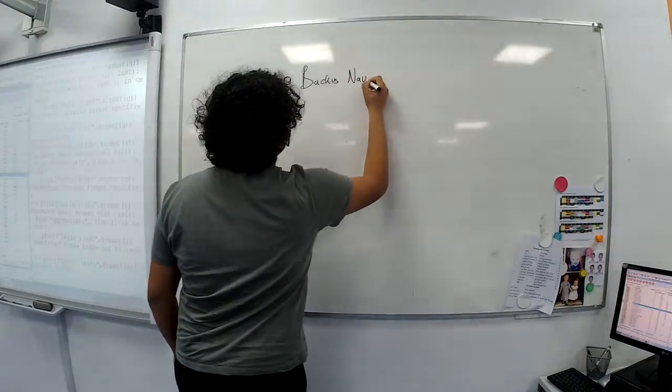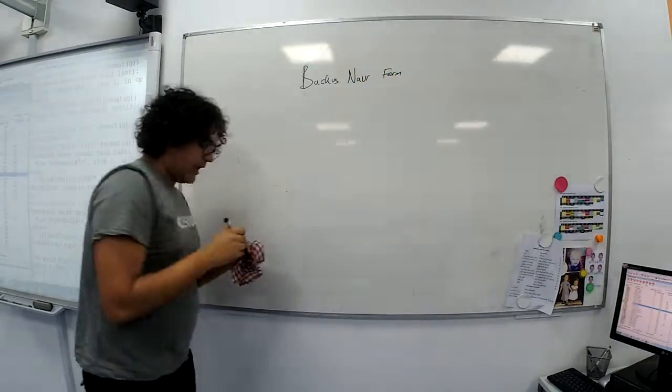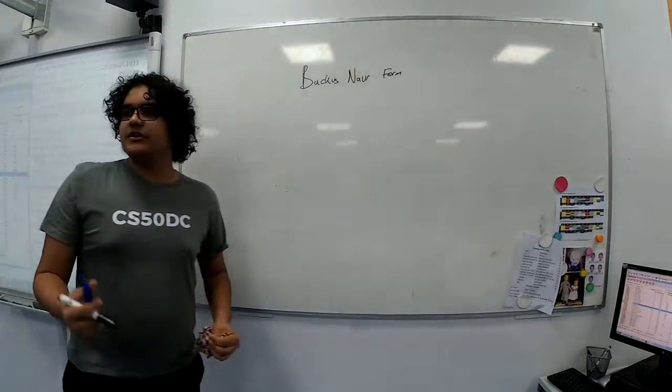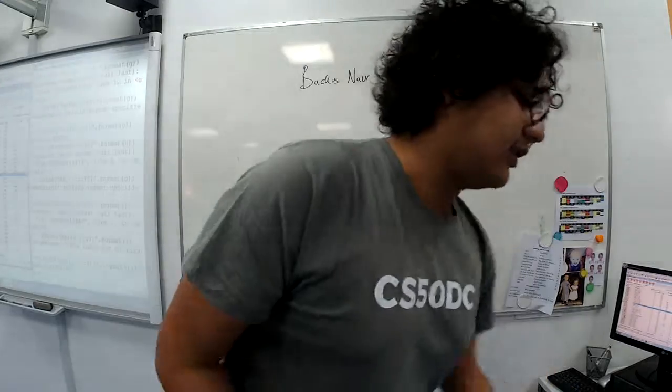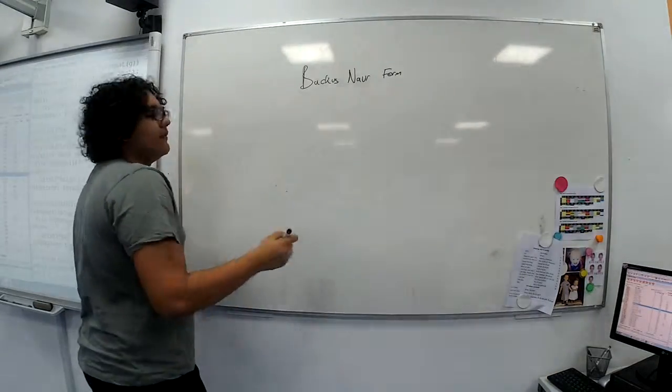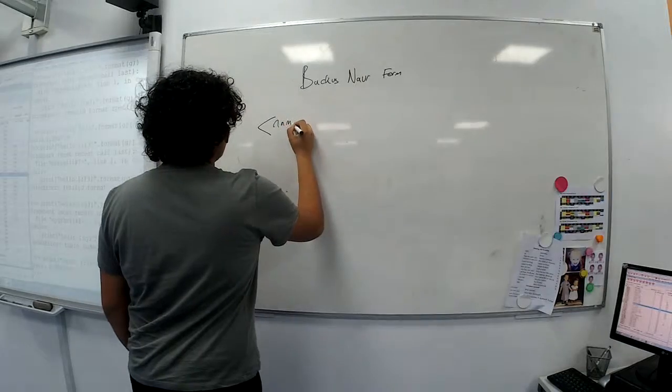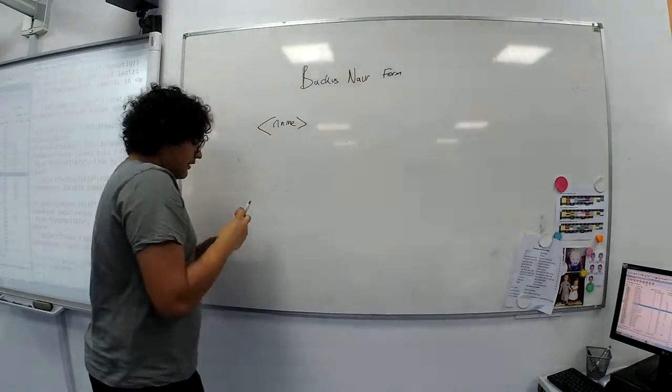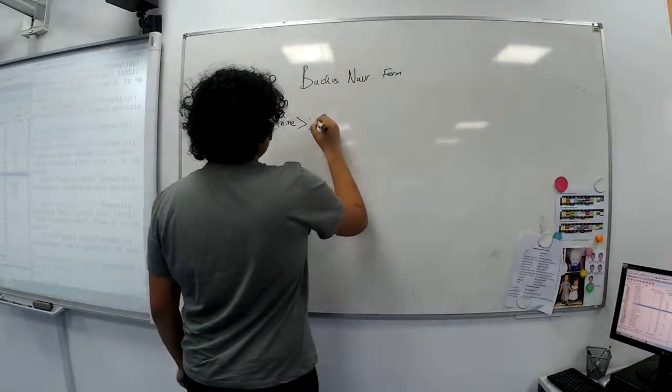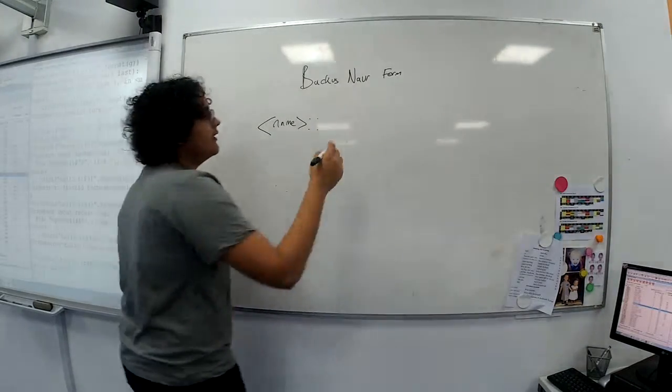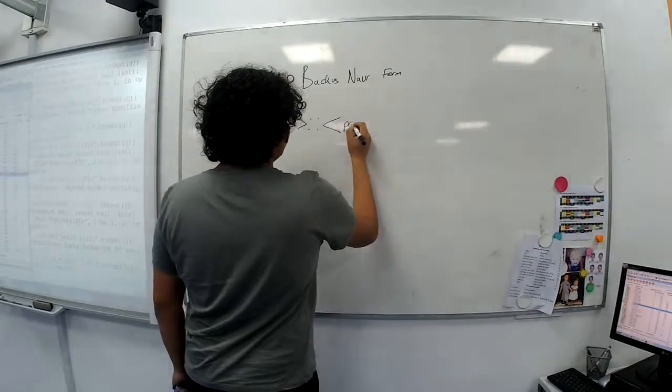Or BNF for short. And BNF is essentially a definition of what certain terms in a language can look like. So if we use stick with the name example, we can say that name can be, so this symbol just means is allowed to be, or can look like, or something like that.